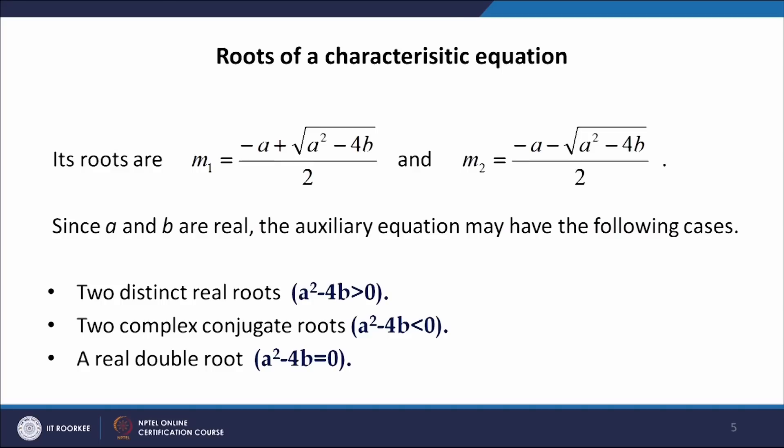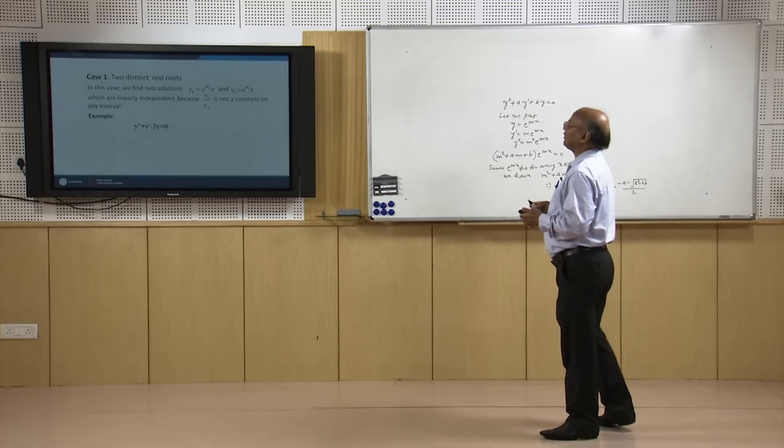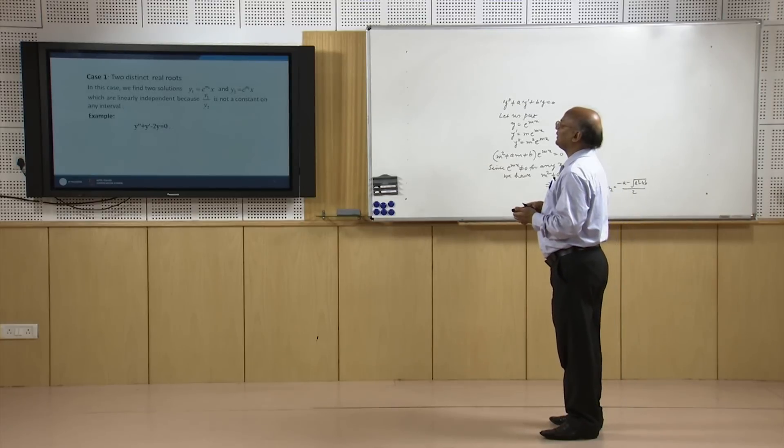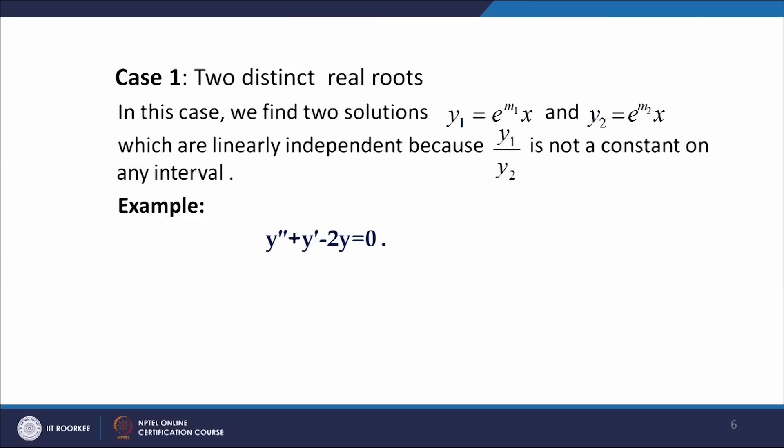We shall discuss these three cases one by one. In the case of two distinct real roots, we find two solutions corresponding to the two values m₁ and m₂: y₁ = e^(m₁x) and y₂ = e^(m₂x).